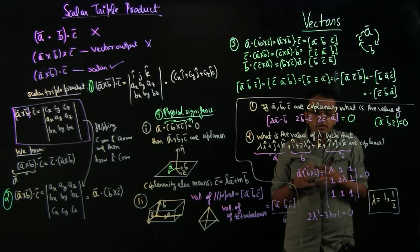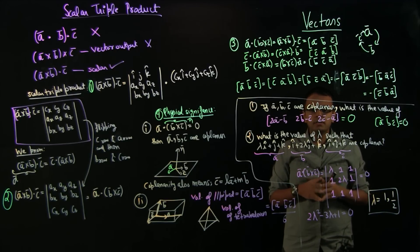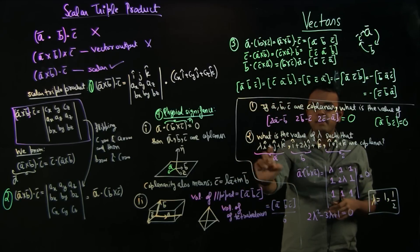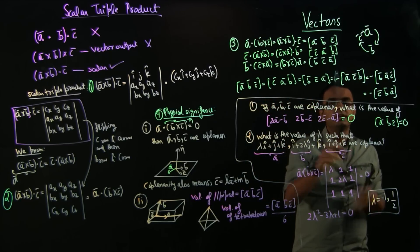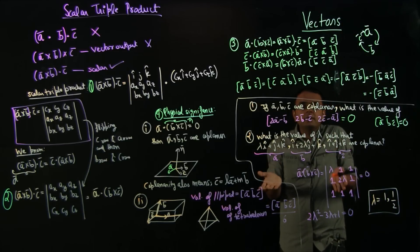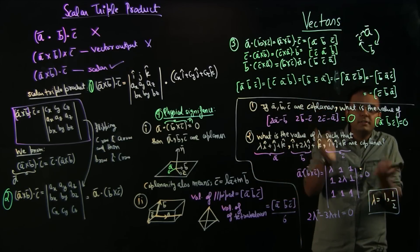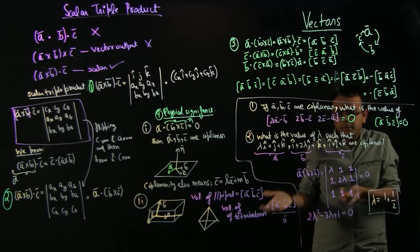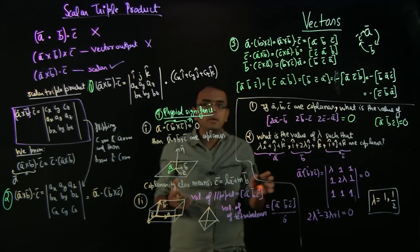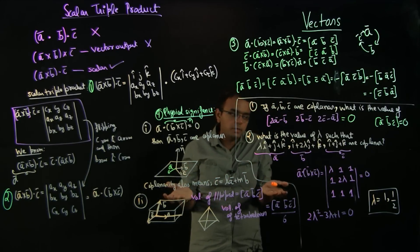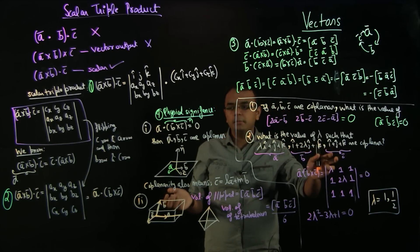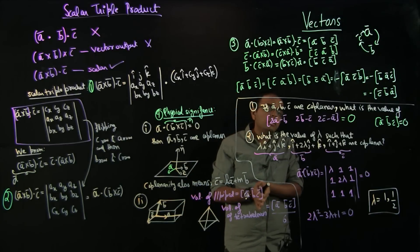We can verify: if λ = 1, then the first vector becomes i + j + k and the second also becomes i + j + k — they are the same vector. If two of the three vectors are identical, their cross product is zero, so the triple product is zero, making them trivially coplanar. If λ = 1/2, then again two vectors become identical, reducing the problem to two vectors which are always coplanar. This confirms both solutions.